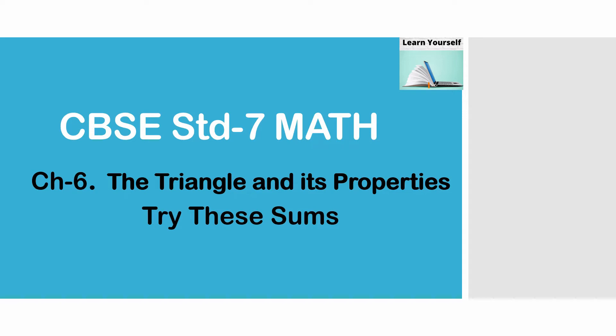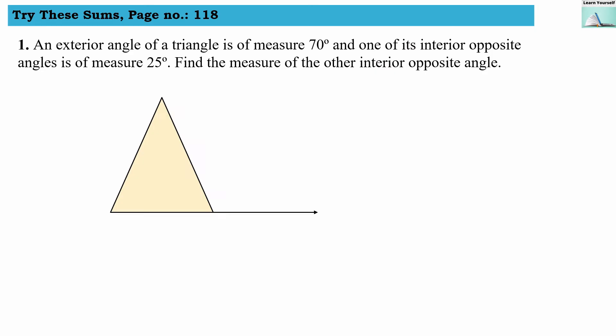Welcome to Learn Yourself. The first numerical: an exterior angle of a triangle measures 70 degrees. I have shown a figure and we need to mark this exterior angle as 70 degrees.